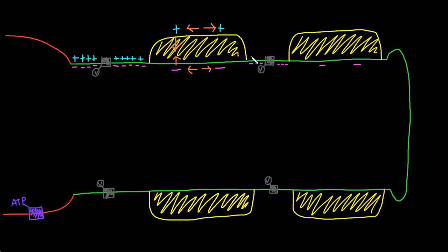For unmyelinated axons, they're basically all just like the nodes of Ranvier — high capacitance, so they store lots of charges on both sides of the membrane. Now consider when the action potential starts and this voltage-gated sodium channel opens: sodium will flow into the axon, bringing positive charges inside. So this area of the membrane is going to depolarize.